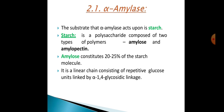The substrate that alpha-amylase acts upon is starch. Starch is a polysaccharide composed of two types of polymers: amylose and amylopectin. Amylose constitutes 20 to 25 percent of the starch molecules and is a linear chain consisting of repetitive glucose units linked by alpha-1,4 glycosidic linkages.